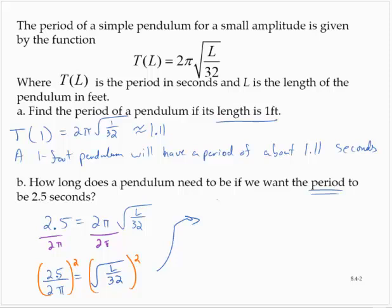So then 2.5 squared, that's 6.25, over 2π squared, that would be 4π squared, is equal to L over 32.